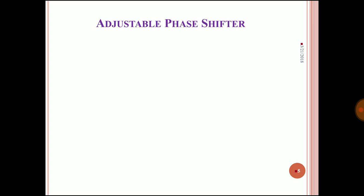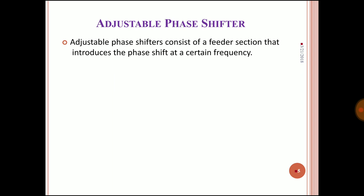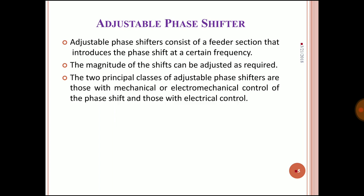Let us understand the adjustable phase shifter. An adjustable phase shifter consists of a feeder section that introduces a phase shift at a certain frequency. At that feeder section, we determine what the phase shift will be. The magnitude of the phase shift can be adjusted, which is why it is called an adjustable phase shifter. It functions based on two principles.